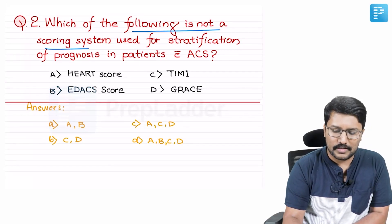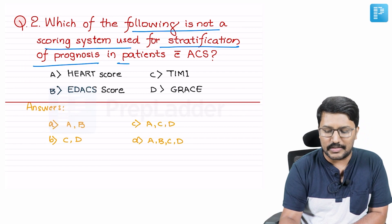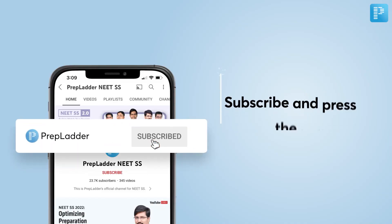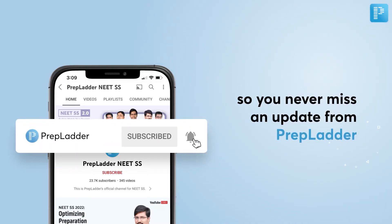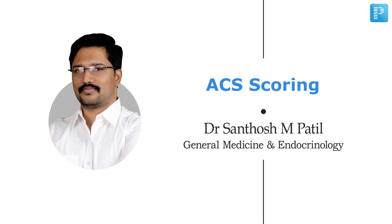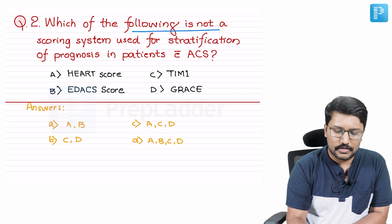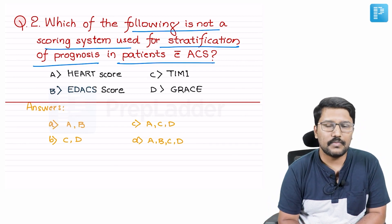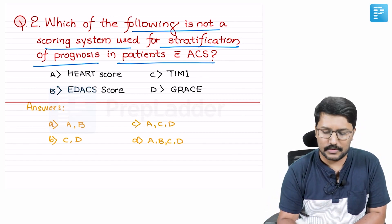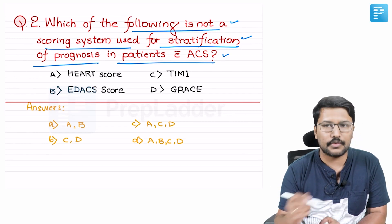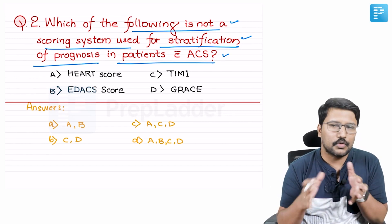Which of the following is not a scoring system used for stratification of prognosis in patients with acute coronary syndrome? You have to pay attention to the wording of this question. What is the question asking? Not a scoring system for stratification of prognosis in patients with acute coronary syndrome. So you encounter two kinds of scoring systems.